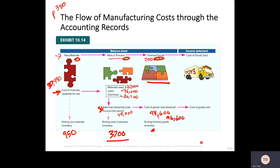Our ending inventory still has $3,200 remaining, so to find our cost of goods sold, we take $96,600 and subtract $3,200 to get $93,400. We had $2,000 worth of finished goods, added $94,000, had $3,200 left at the end — that means we sold $93,400 worth.